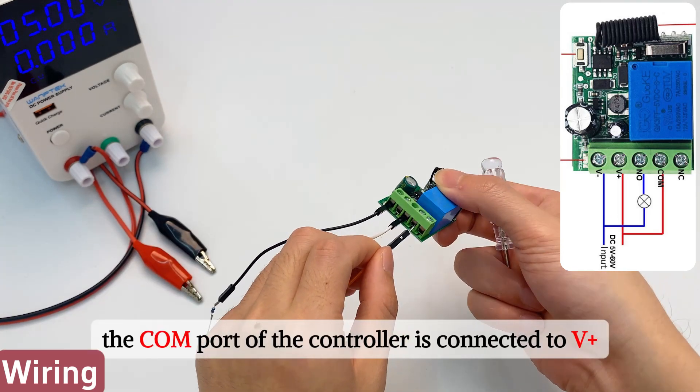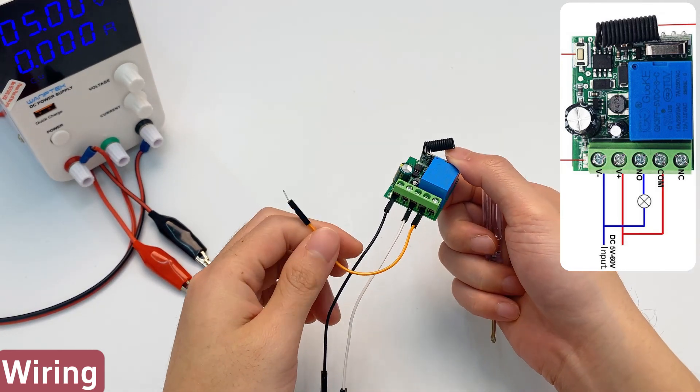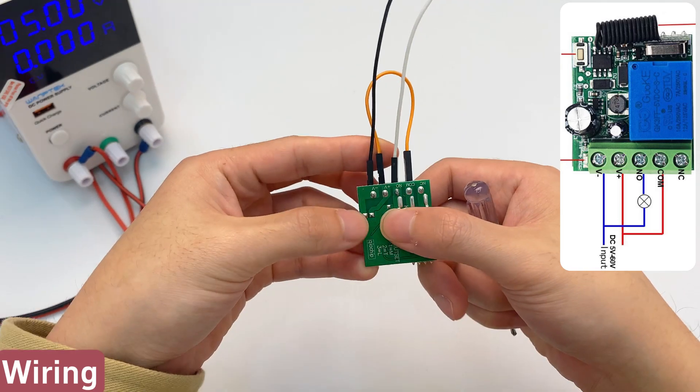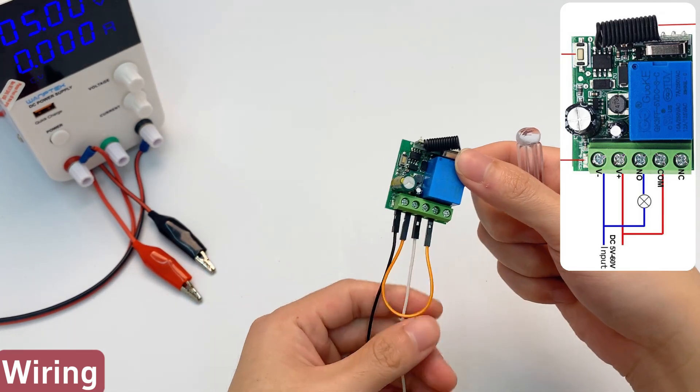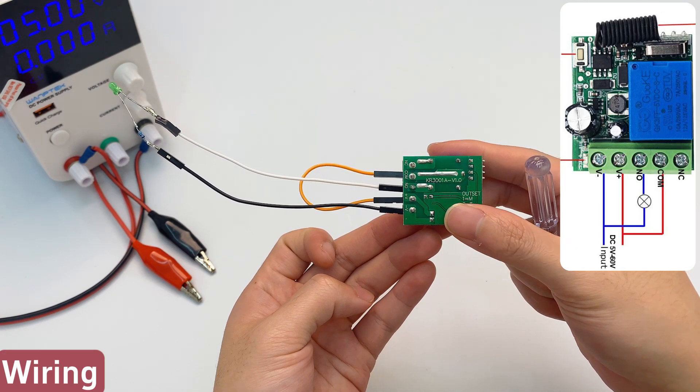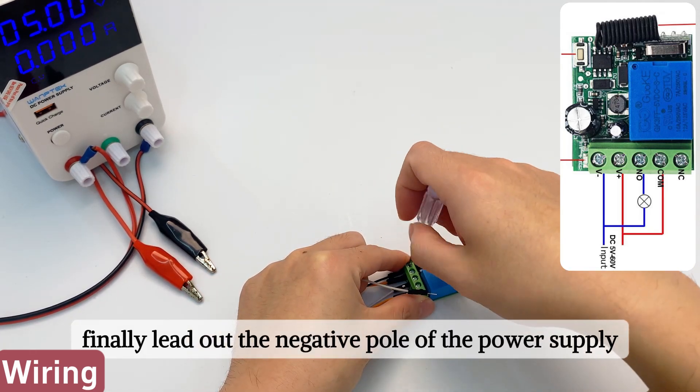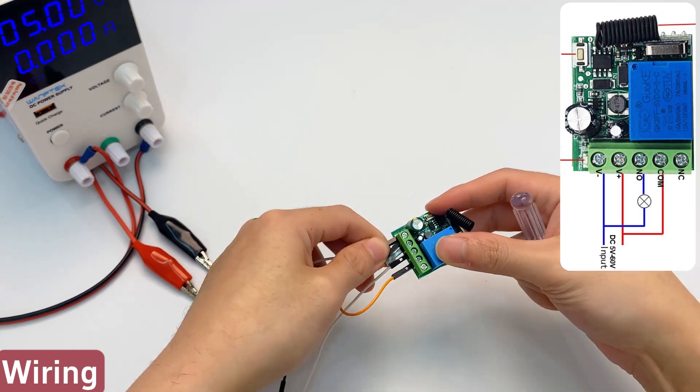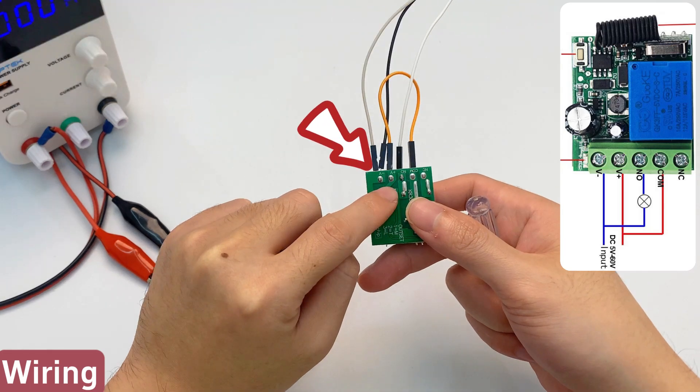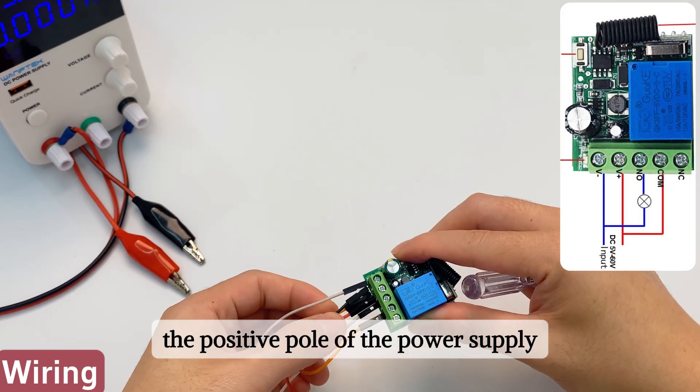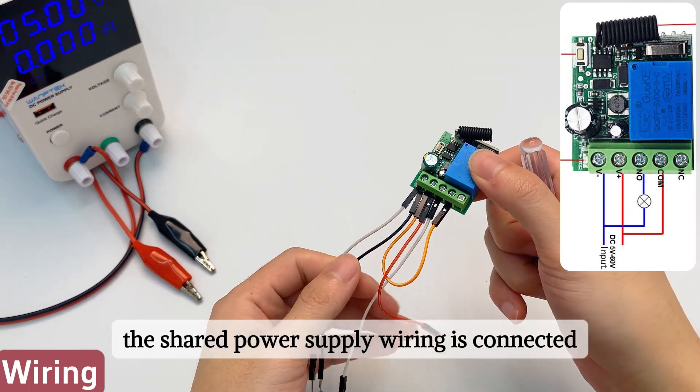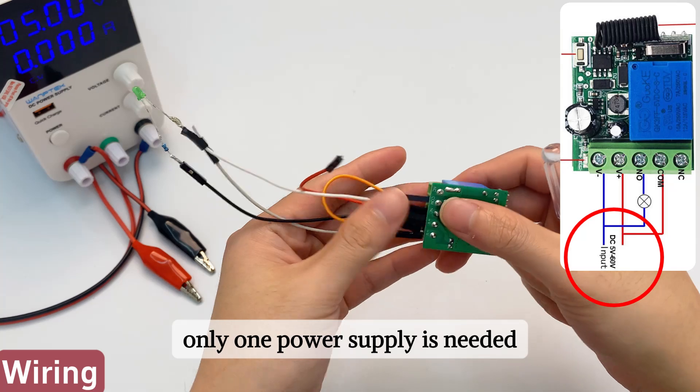The COM port of the controller is connected to V plus of the power supply. Finally lead out the negative pole of the power supply and the positive pole of the power supply. The shared power supply wiring is connected. Only one power supply is needed.